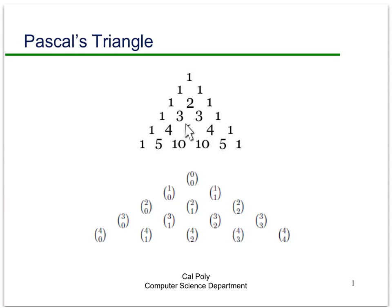So for instance this 6 we get by adding this 3 to this 3. The 4 comes from adding this 1 to this 3 gives 4. 10 comes from this 4 to this 6.